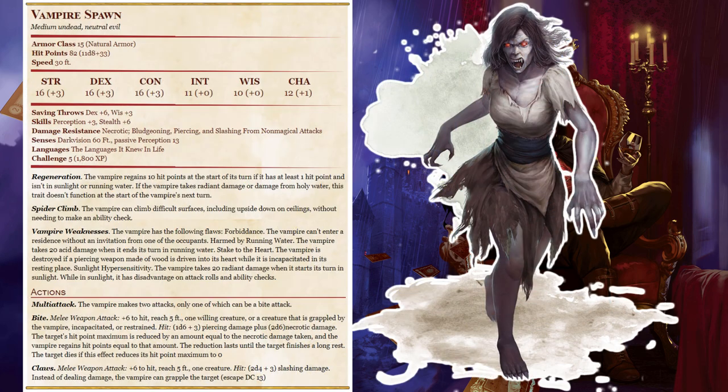Vampire Spawn: If any character has a passive wisdom perception of 16 or higher, the party isn't surprised. Read: 'Creatures with pale flesh scuttle across the ceiling like spiders, their red eyes glowing in the dark. As they draw near, their cracked and bloodstained lips open wide, revealing sharp fangs.' These minions of Strahd — former adventurers — creep along the ceiling and drop down on unsuspecting prey. The vampire spawn fight until destroyed.